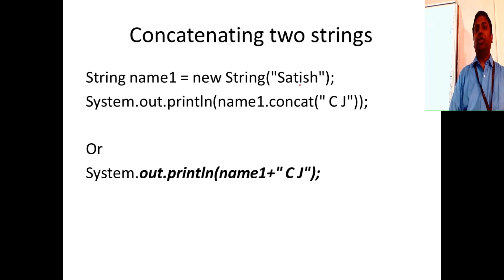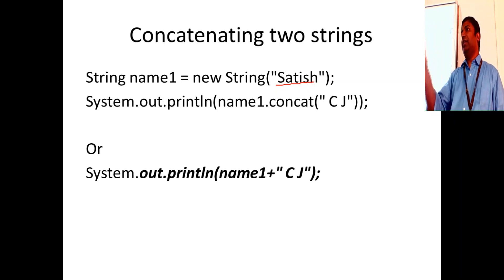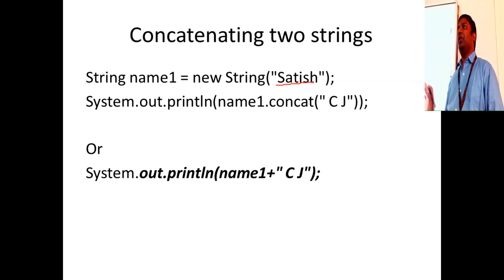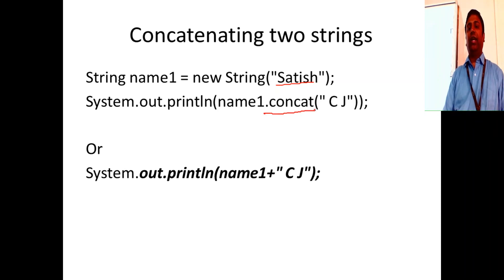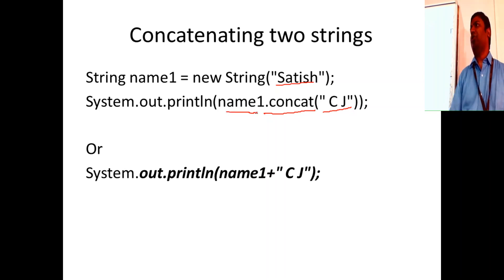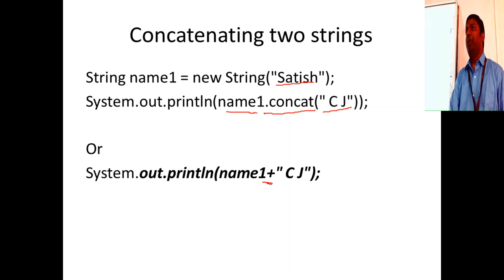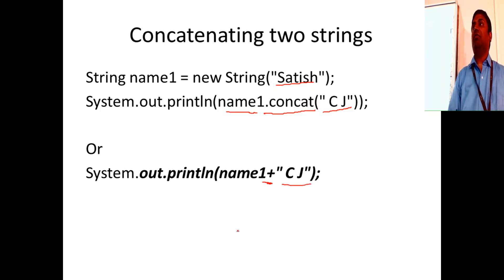When you concatenate two strings, another string is created in a new location and the reference points there, because strings are immutable. To concatenate, use `.concat()` and pass the string you want to append. Another easier way of joining two strings is the `+` operator, which we have already used many times.